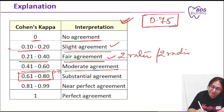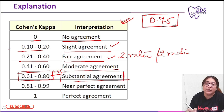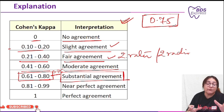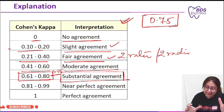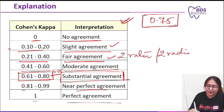So 0.75 falls under the 0.61 to 0.80 range, meaning the correct answer is substantial agreement between the two radiologists evaluating fractures on the x-ray. 0.8 to 0.9 is near perfect agreement, and 1 is perfect agreement.